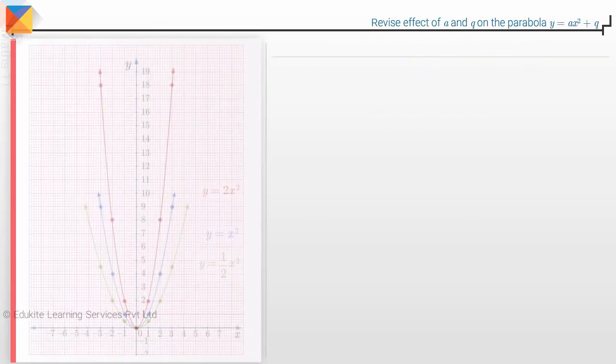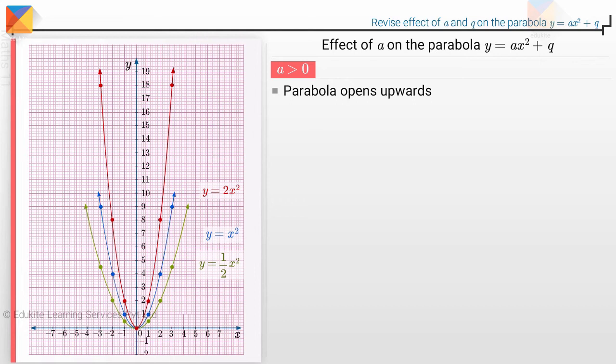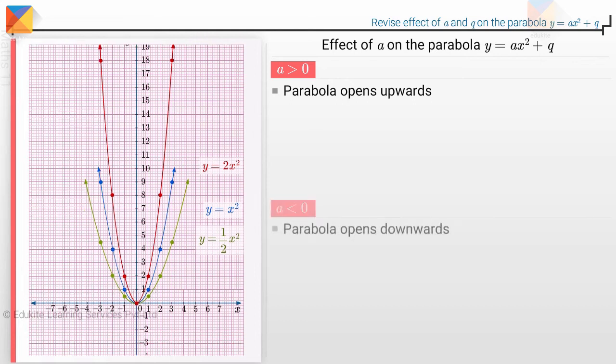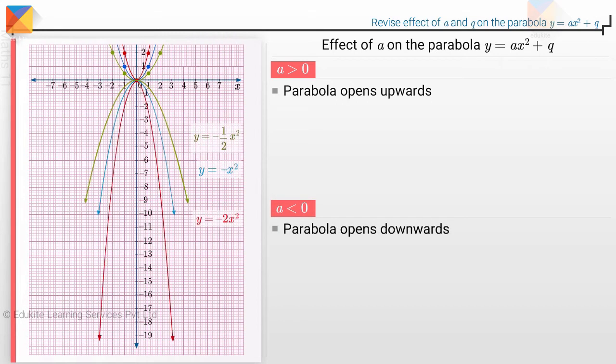Revise effect of A and Q on the parabola y equals ax squared plus Q. We saw that the parabola opens upwards when A is positive, while it opens downwards when A is negative.